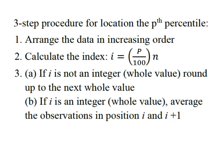In step three, we have to make a decision. If our index is not an integer, whole value, then we round up to the next whole value. But if i is an integer, a whole value, then we're going to average the observations in the index position and then the index position right below it, which is i plus 1.